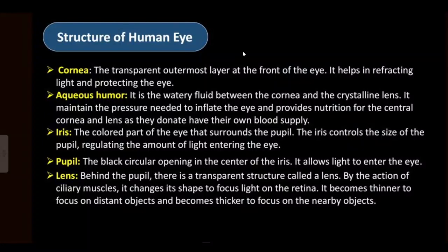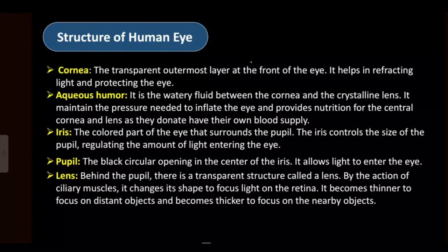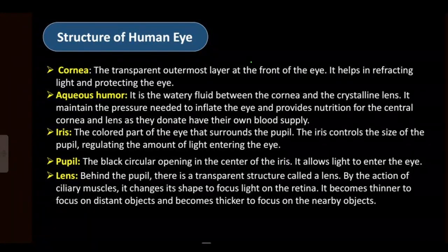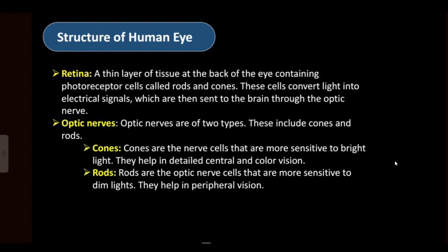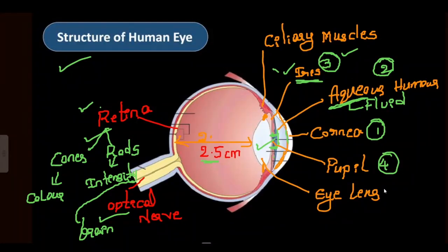When an image forms on the retina, the cones and rods activate and collect information about the object, then send it to the optic nerve. The optic nerve transfers this information to the brain. The brain receives, collects, and analyzes all this information, then produces a clear image of the object. Optic nerves themselves are more sensitive to bright light and give information about color, while rods give information about intensity.